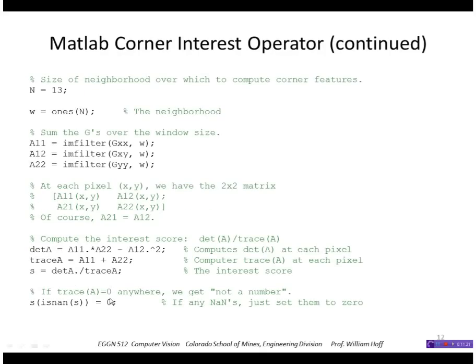I then sum those values over a neighborhood. Here I'm taking a 13 by 13 neighborhood of ones, and I'm filtering that with my G images. So now I have three images where the scores are the local sum of those derivative type values. At each pixel now, I have a 2 by 2 matrix, essentially, which is that matrix A that I'm looking for. Finally, I'll compute the interest score. I'll use the determinant divided by the trace score, and here are the equations for the determinant and trace of a 2 by 2 matrix.